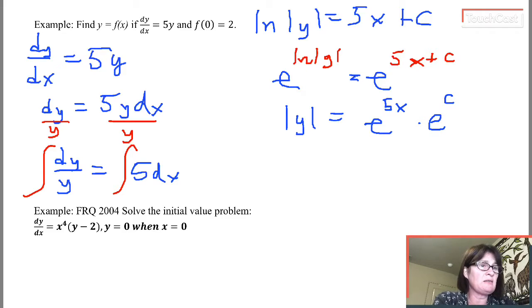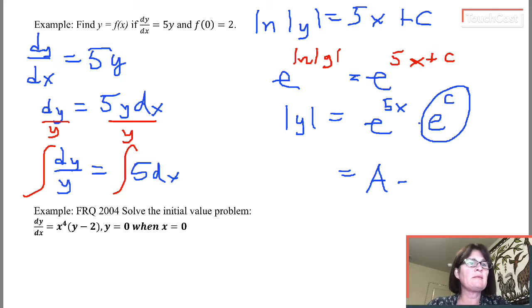e is a constant, 2.71828. c is some constant. So if I take a constant, I raise it to a constant power, I'm going to have just some other new constant. It is conventional, it is not required, but it is conventional at this point to replace e to the c, which is some constant, with a new constant a.